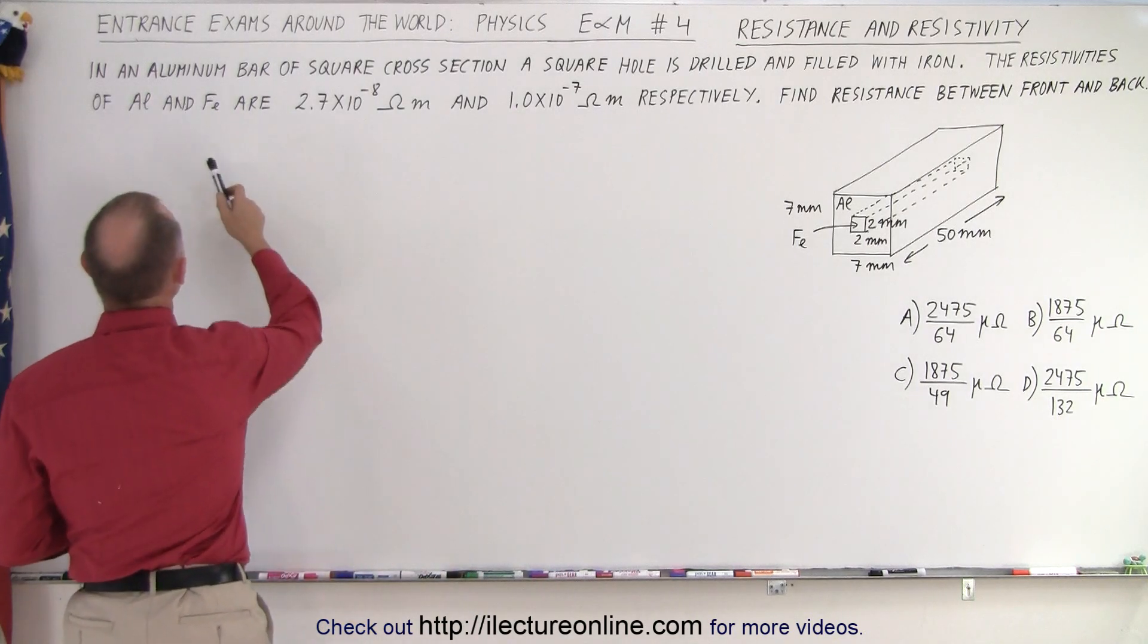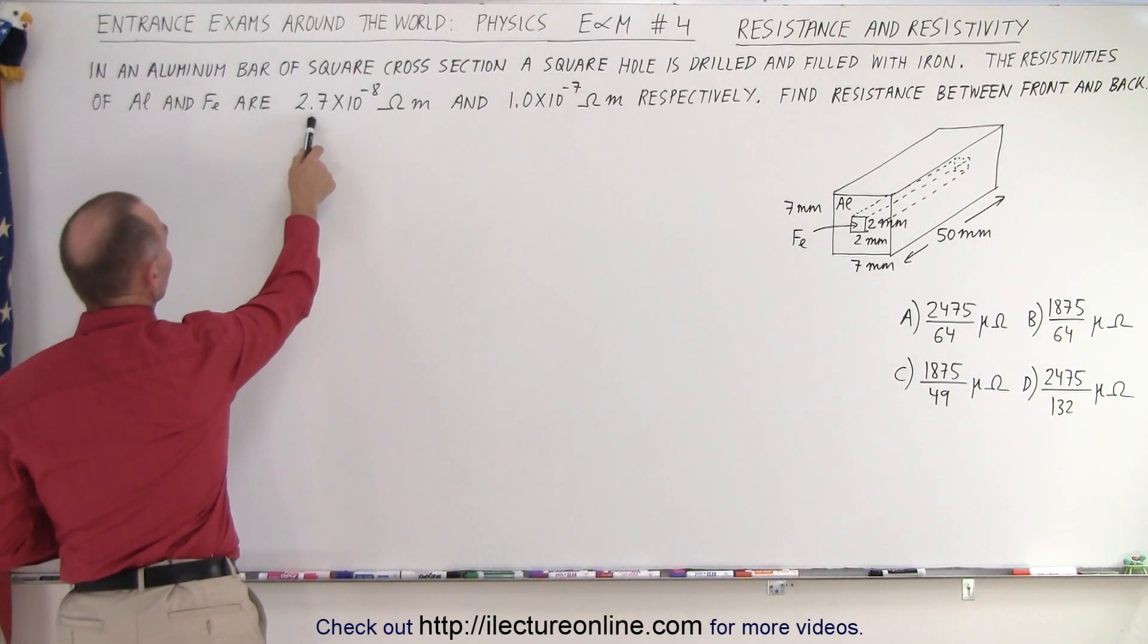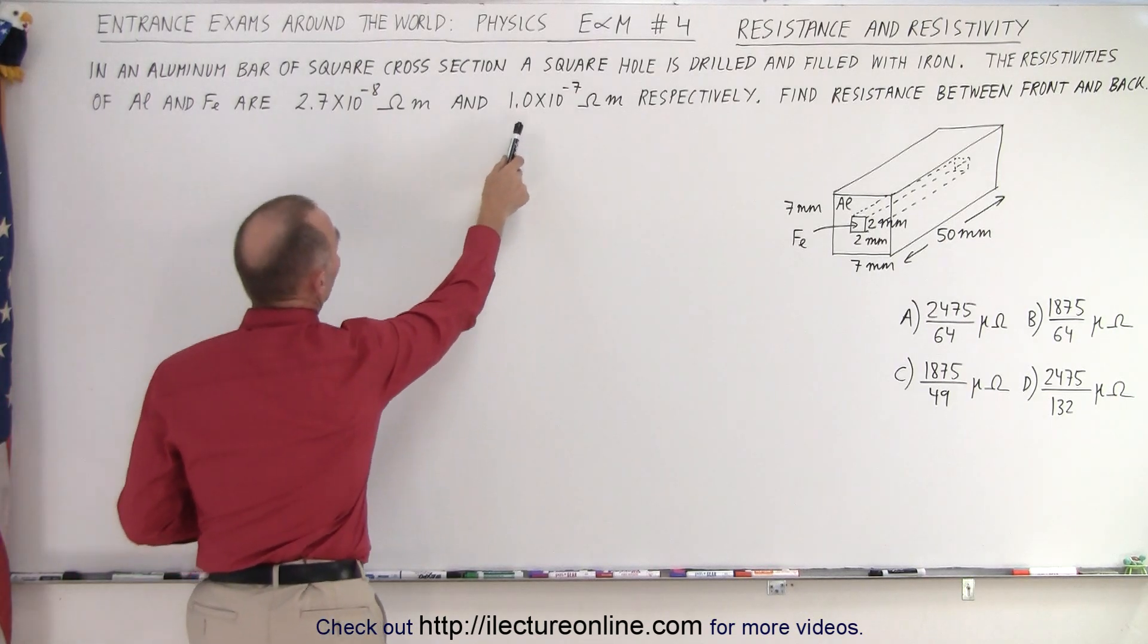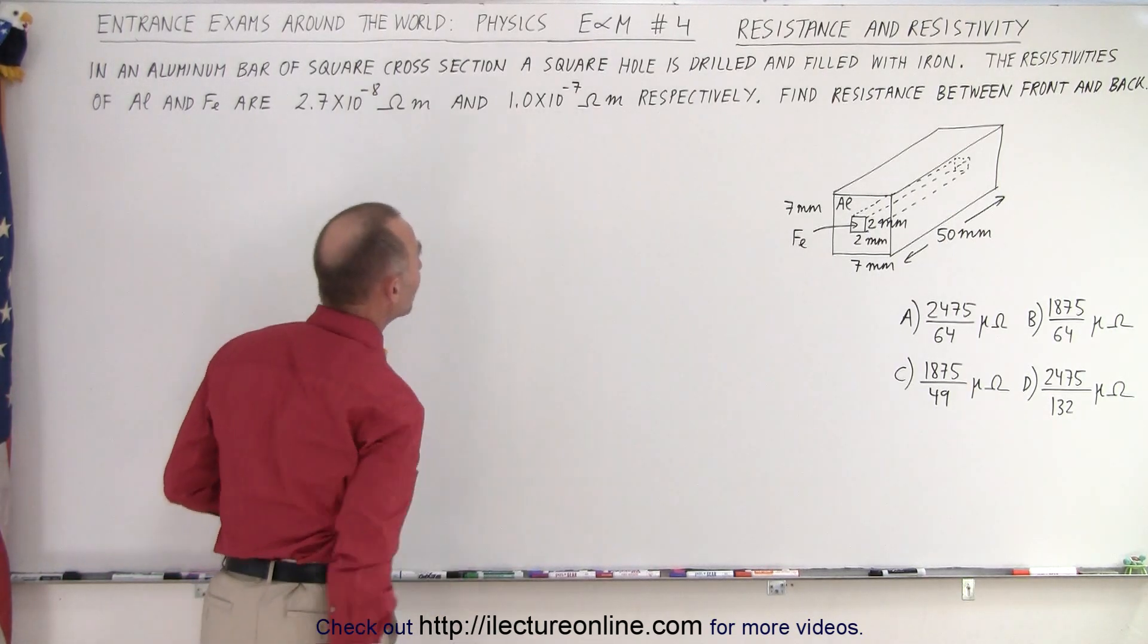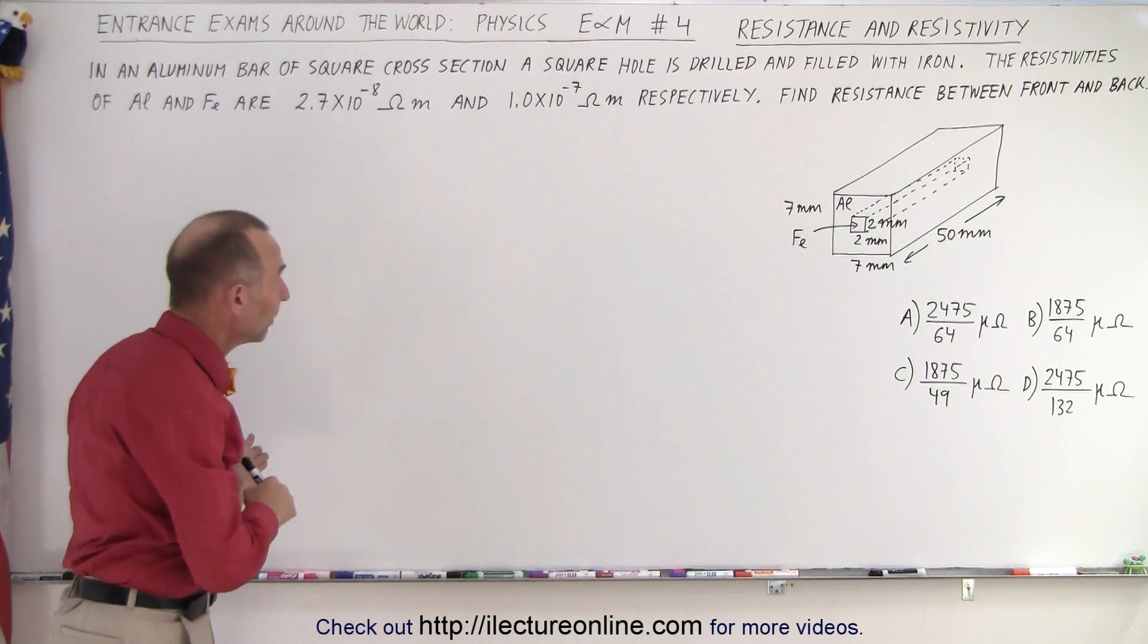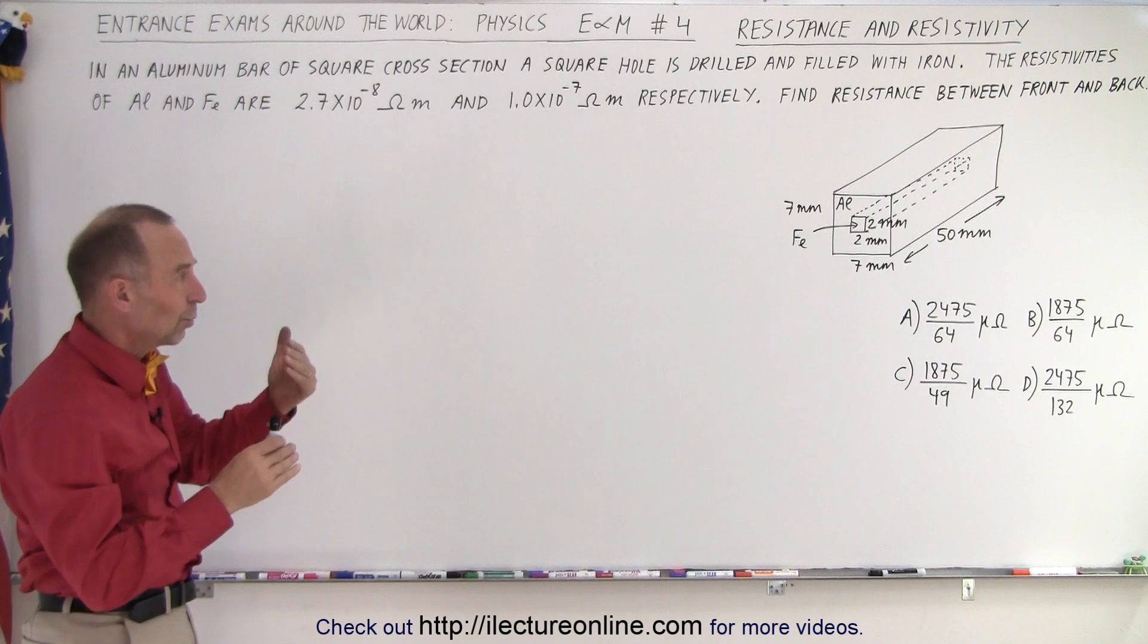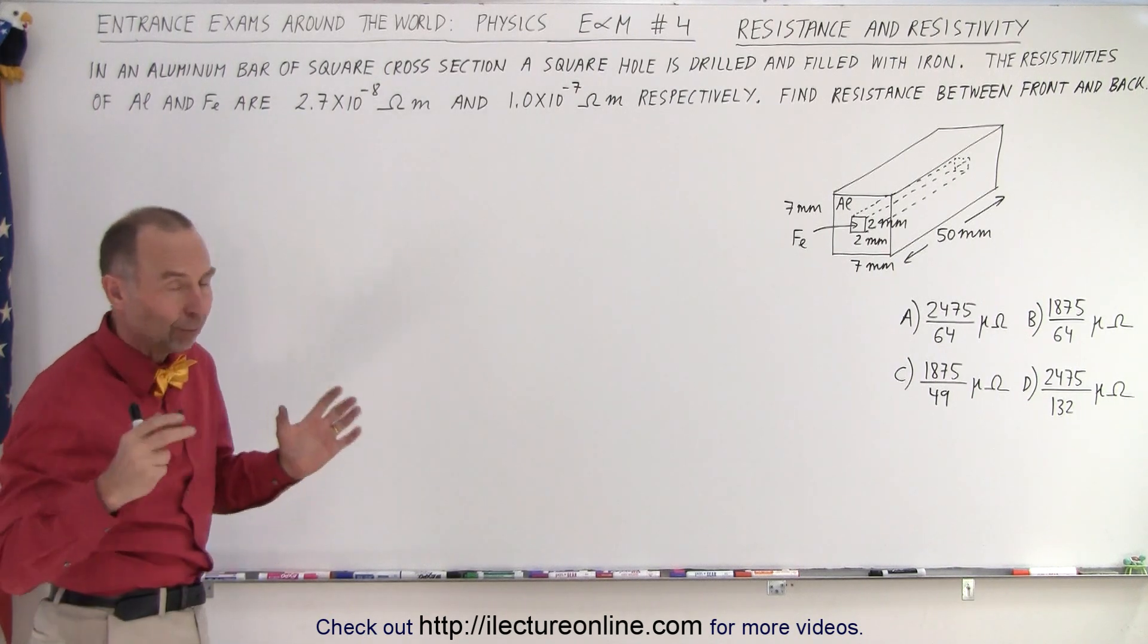Now they give us the resistivity of aluminum and iron as 2.7 times 10 to the minus 8 ohm meters and 1.0 times 10 to the minus 7 ohm meters for aluminum and iron, and they want us to find the resistance between the front and the back of that block.